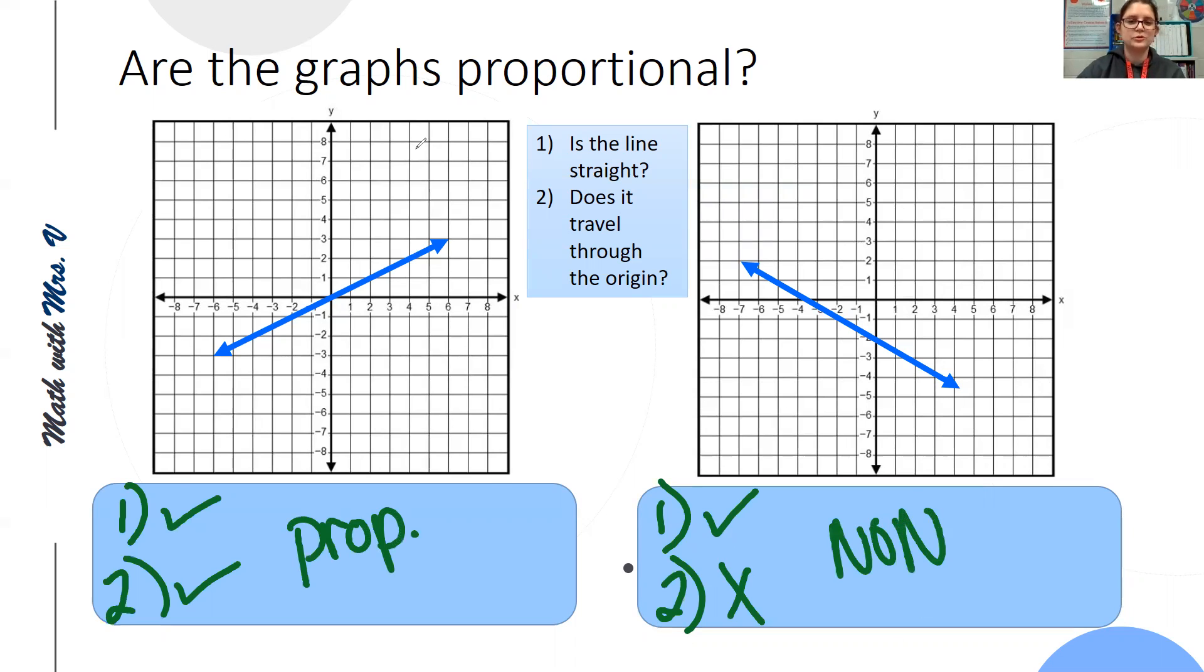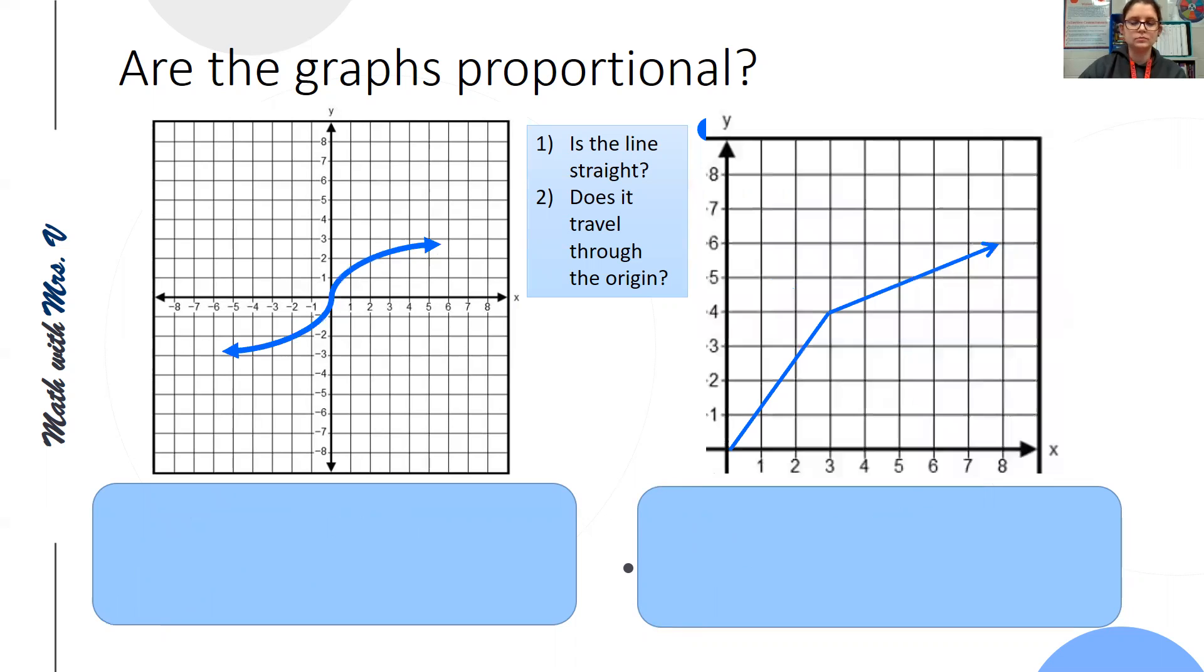So we have one proportional and one non-proportional. Let's look at our next set of examples. This first one, is it a straight line? Yes. Does it, or I'm sorry, no, this is a curved line. Does it travel through the origin? It does, yes. But because it's a curved line, this is non-proportional.